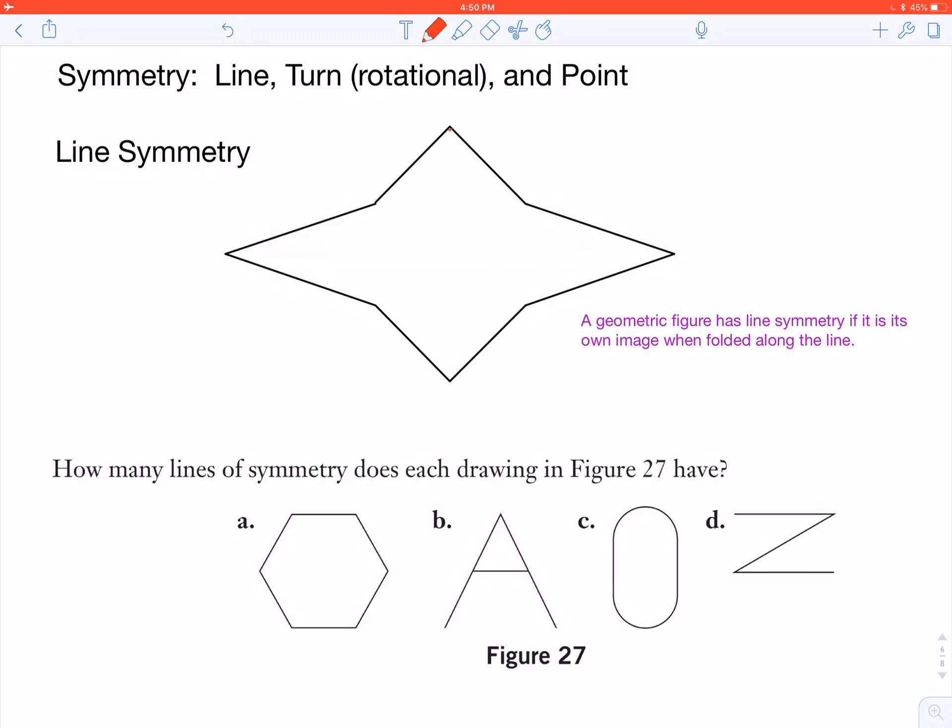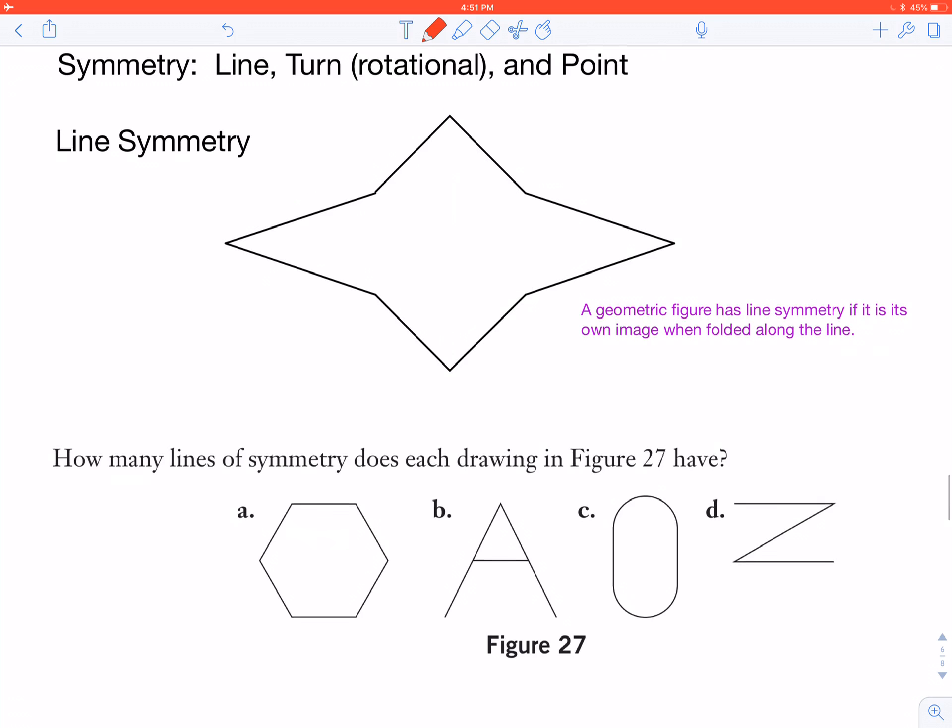Another line of symmetry in this particular figure is going to be, if I can get it to straighten out there, there you go. It is going to be this way. So it has two lines of symmetry, this particular figure. That's going to be line symmetry.